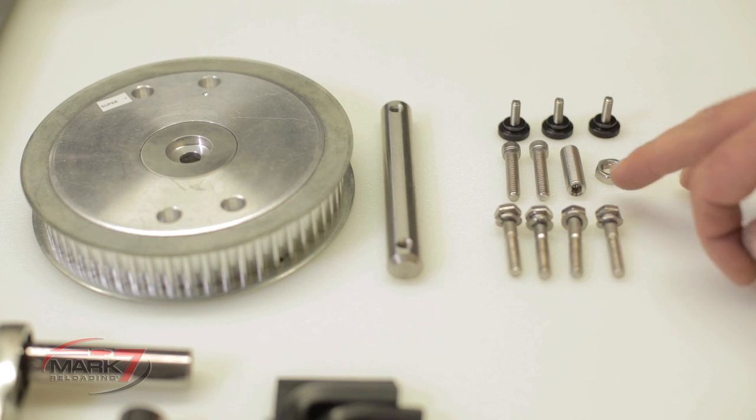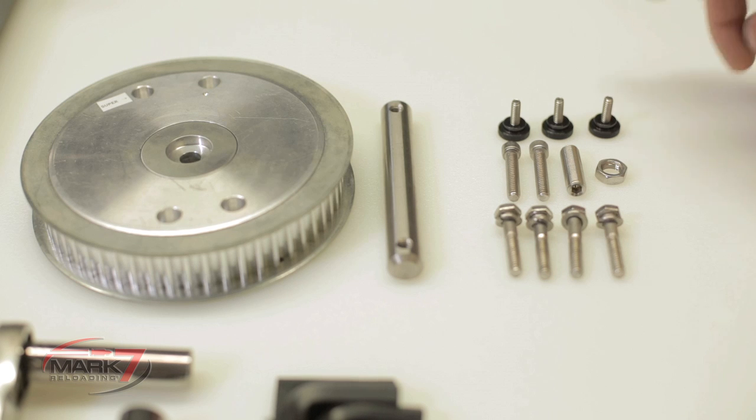A set screw is inserted and then tightened down with a jam nut, and there are three thumb screws for fastening the belt guard to the base plate.